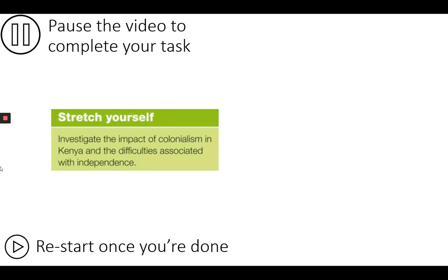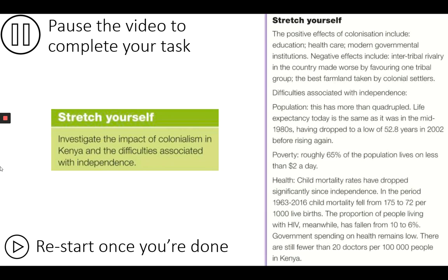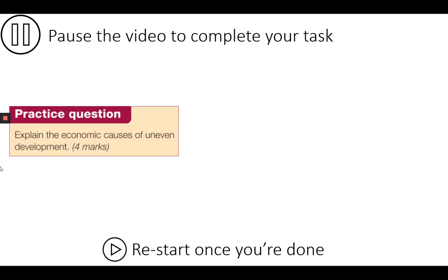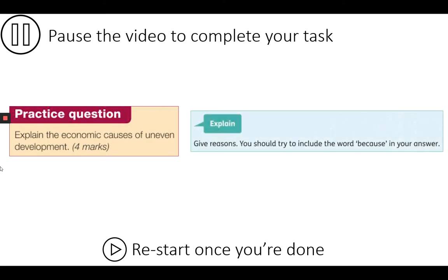Pause the video while you copy down this four-mark question. The command term is 'explain' — this is all about giving reasons. You're on the right tracks if you can use the word 'because' in your response. Use what you've learned during this video and the previous two videos on economic and physical causes to help you write your response, and then resume the video to see the mark scheme.